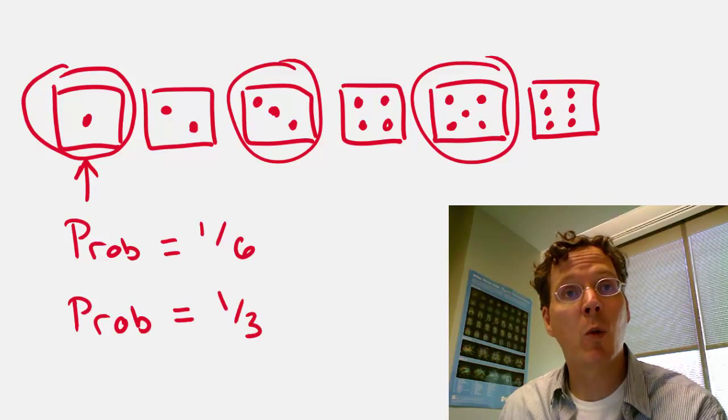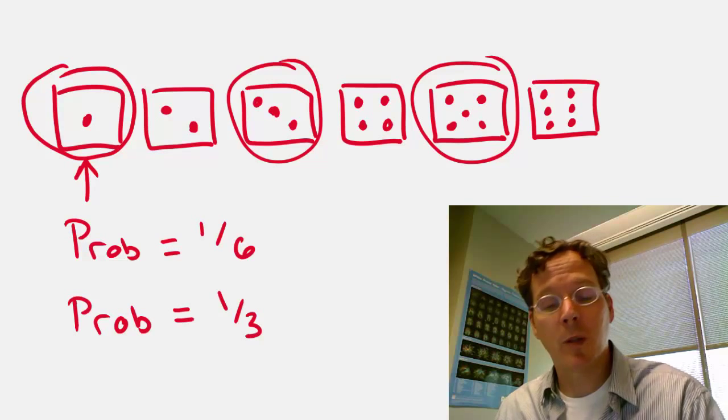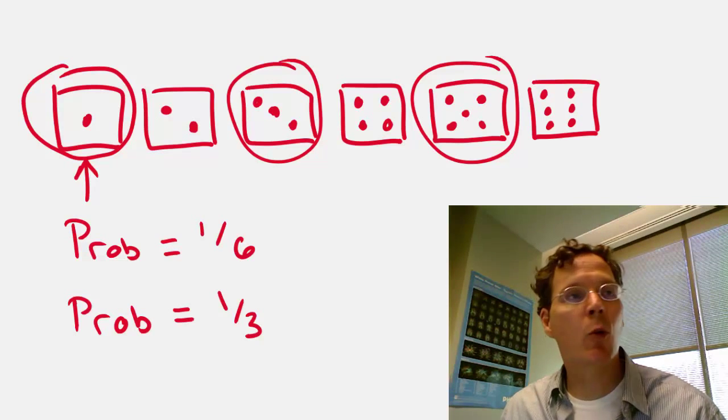you would not say the probability of a 1 is 1 sixth anymore. You would now say it's 1 third, equally likely between the 1, the 3, or the 5. And that's what conditional probabilities are giving you. And of course, they have a definition.